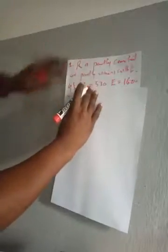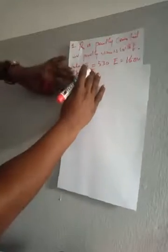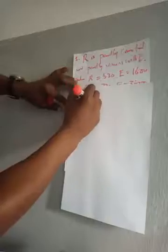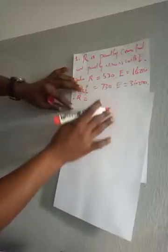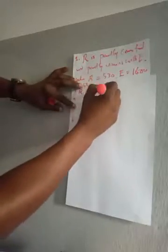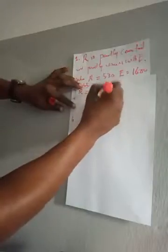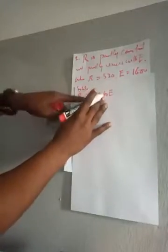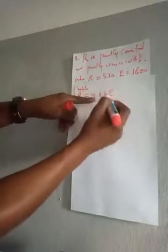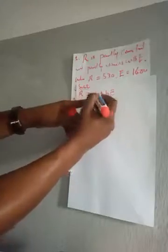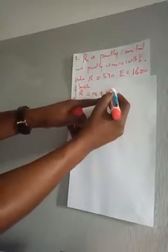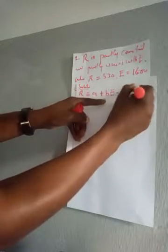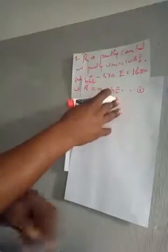To solve this, you need to interpret the statement. R is partly constant and partly varies with e, so we write: r is equal to a plus be. This is equation 1. Now we introduce the given information.